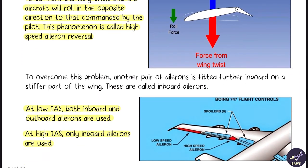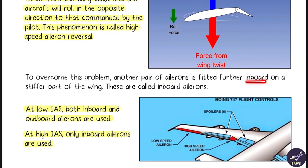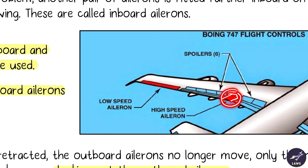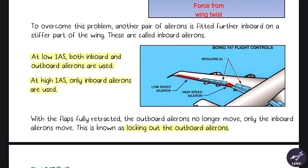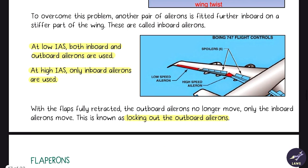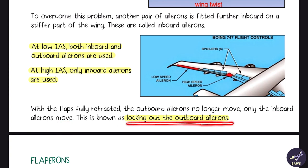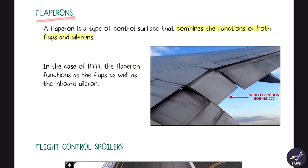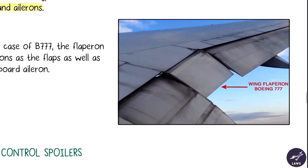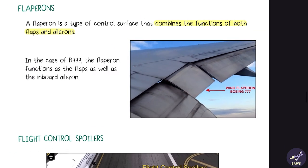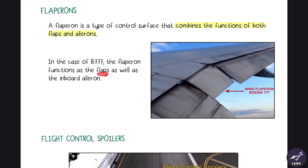To overcome aileron reversal, another pair of ailerons is fitted further inboard — the inboard or high-speed ailerons. At low IAS both outboard and inboard ailerons are used; at high IAS only the inboard ailerons are used, with the outboard ailerons locked out. Flaparons combine the functions of both flaps and ailerons — as seen on the Boeing 777, they function as flaps as well as inboard ailerons.